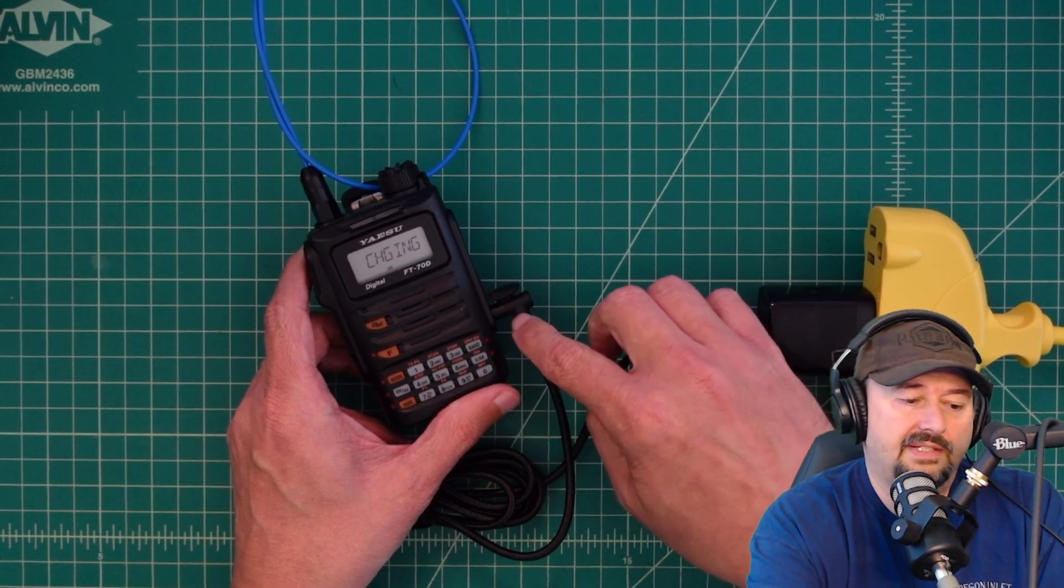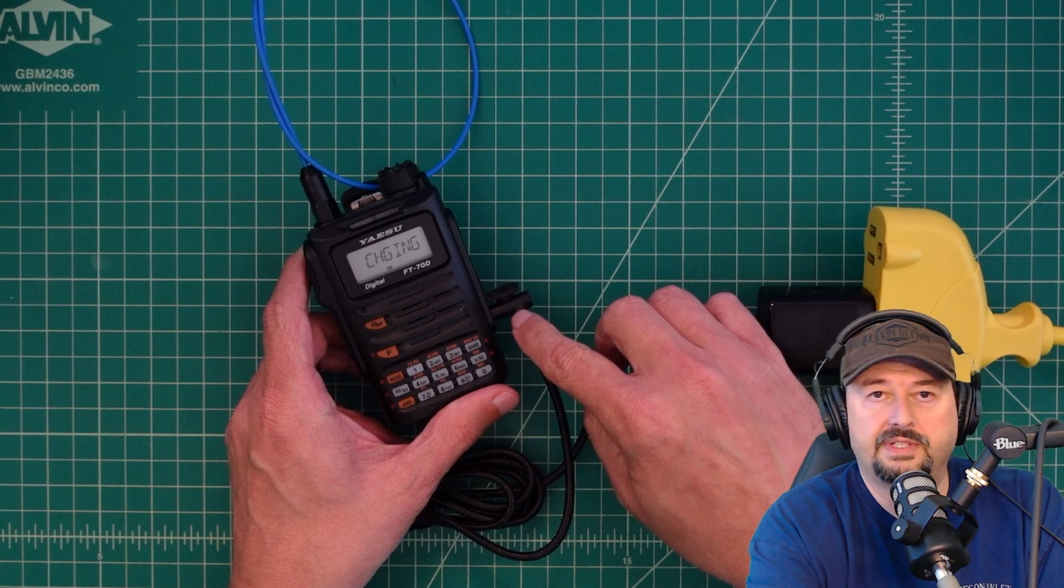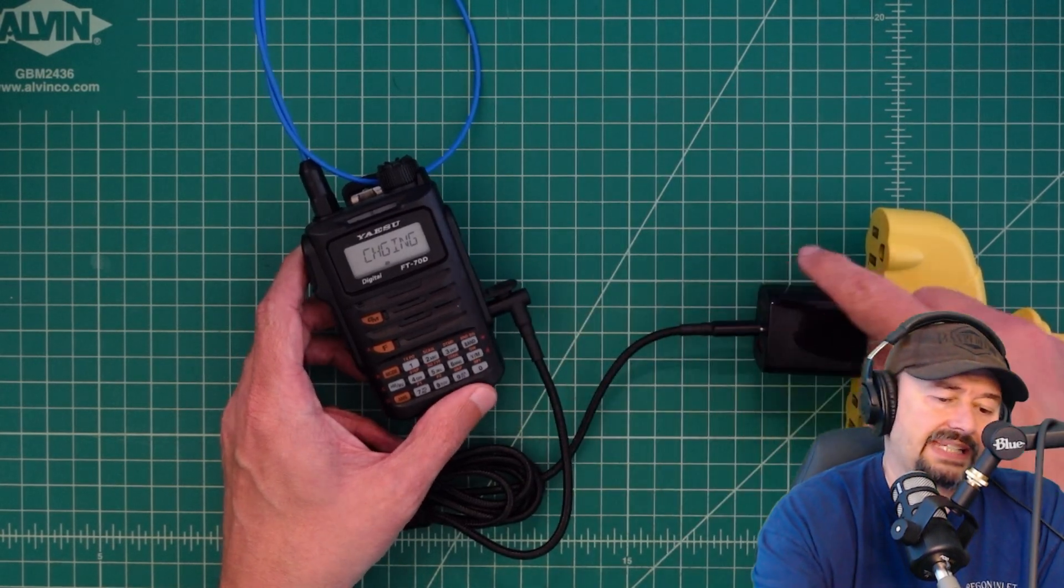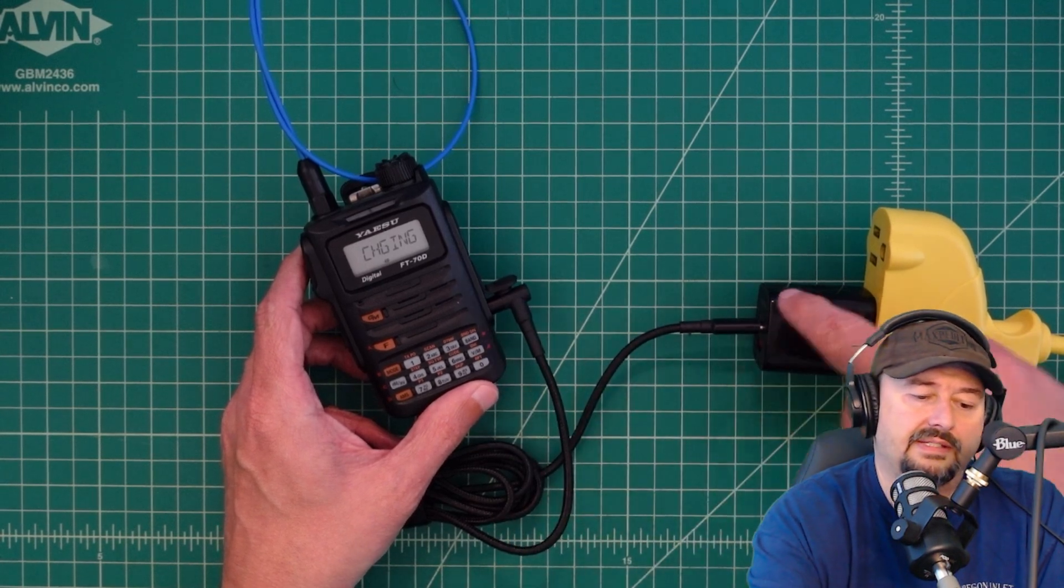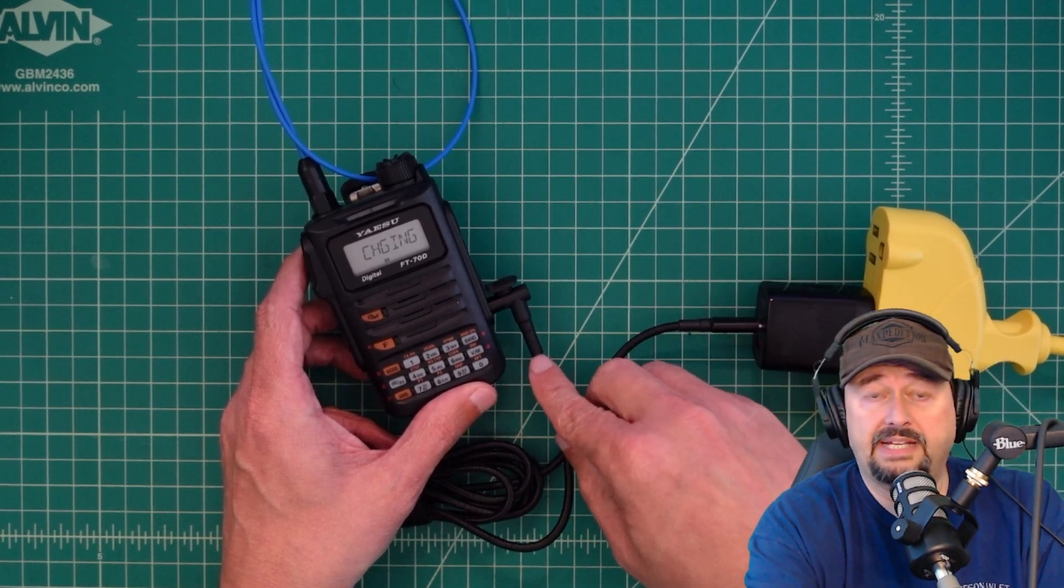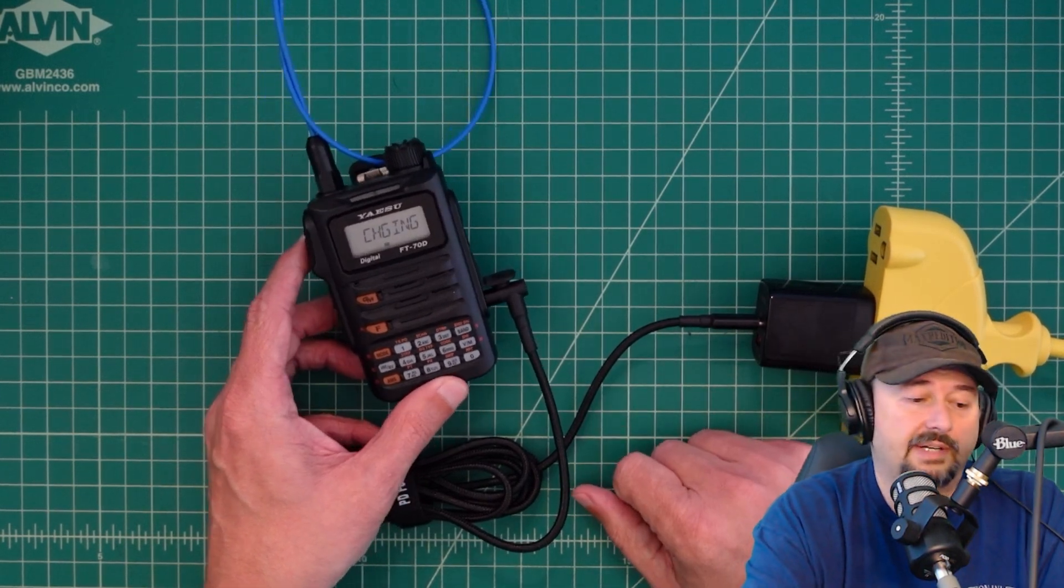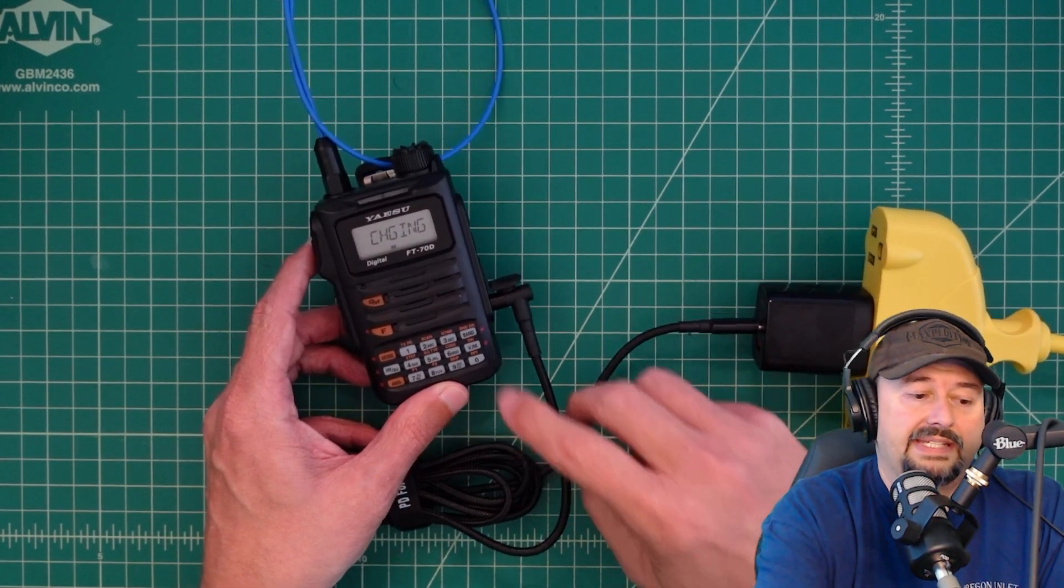Now the charger that comes with the Yaesu has an output voltage into the radio of around 10.5 volts. I'm not exactly sure what this is supplying from a voltage standpoint. Given all the test gear I have I don't have a way to measure that surprisingly. But what I can see is that this can charge.